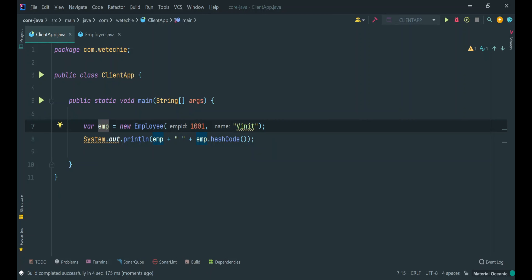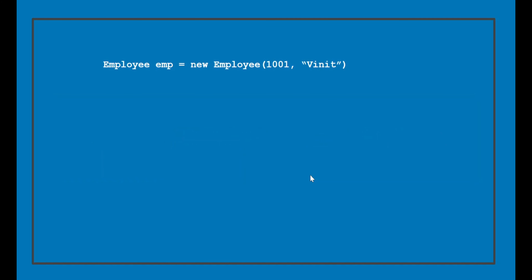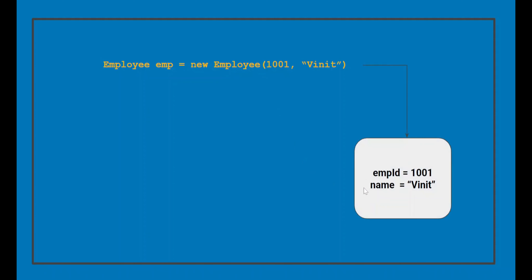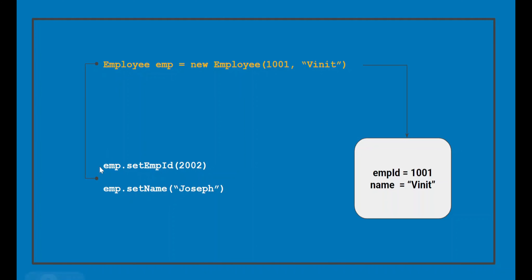Now, as this is a mutable class, when we do any modification we can understand its internal heap memory behavior through this graphical representation. This single line of code creates the employee object in memory. As it is a mutable object, through the emp reference we still have the right to modify the existing object. So through emp we will update the empId and name of the employee. When we execute these two lines of code, it will do a modification in the existing object already present in heap memory — that is the behavior of a mutable class.